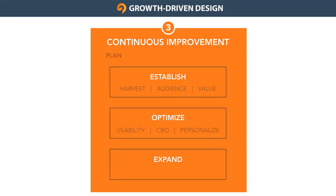The Optimize theme revolves around improving the user experience and the business performance of existing items on the site. The three focus areas under Optimize include improving usability on the site to ensure that visitors can unlock that value as quickly as possible, doing conversion rate optimization or CRO to reduce the friction or the steps within your conversion funnels, and personalization, to provide a hyper-relevant experience for each user or user segment.